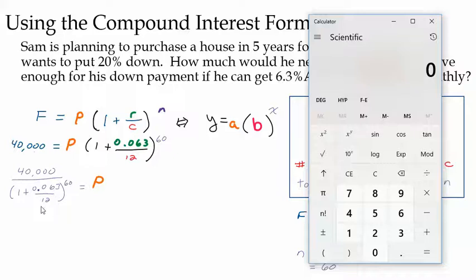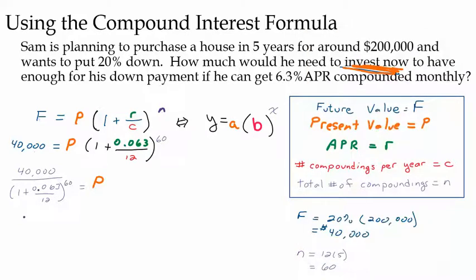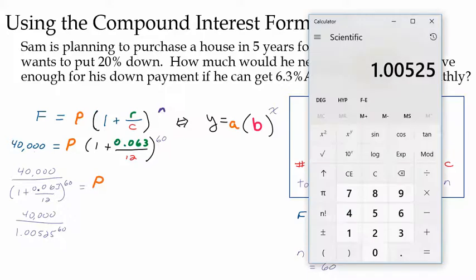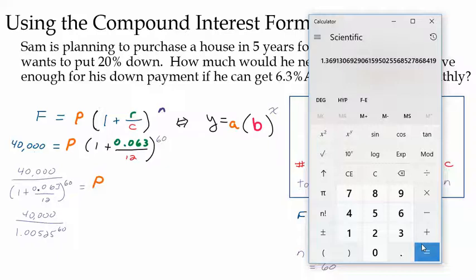Now how I would punch this into my calculator really would depend on the type of calculator that I had. So for this little guy, the first thing I'm going to do is figure out what is 1 plus 0.063 divided by 12, and that number is not too bad there, 1.00525. So I have 40,000 divided by 1.00525 to the 60th. Now with this little calculator, if I take this number to the 60th power, I get this big decimal.